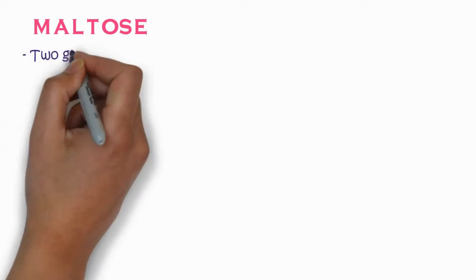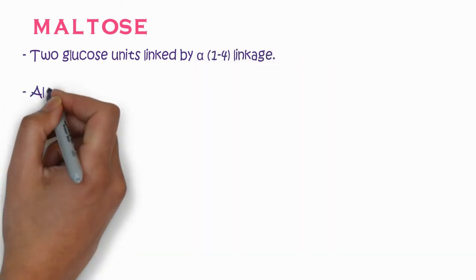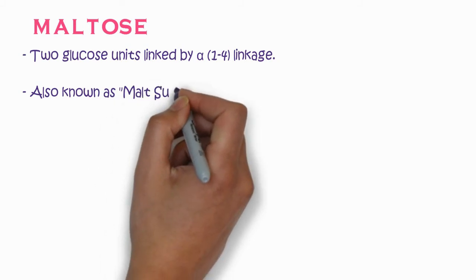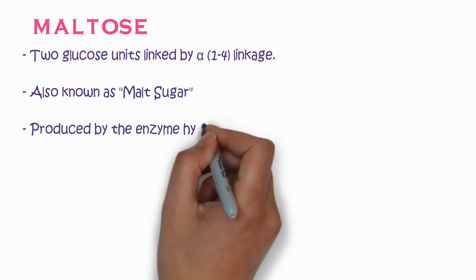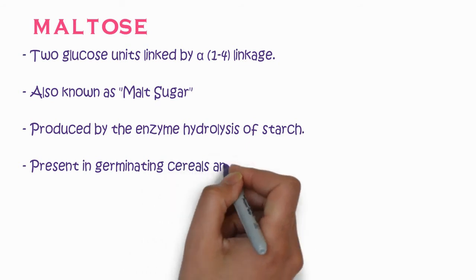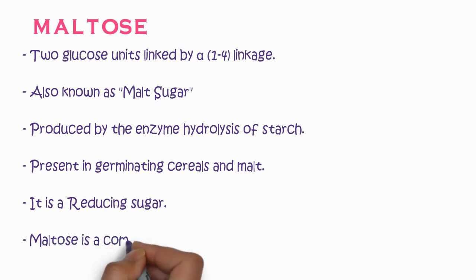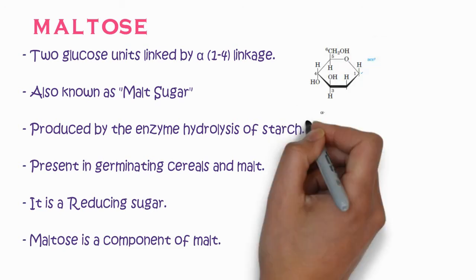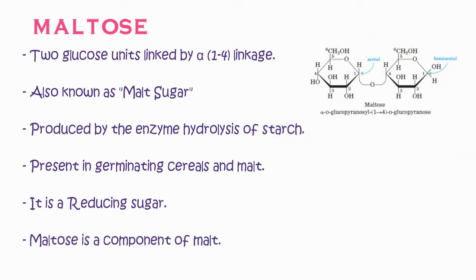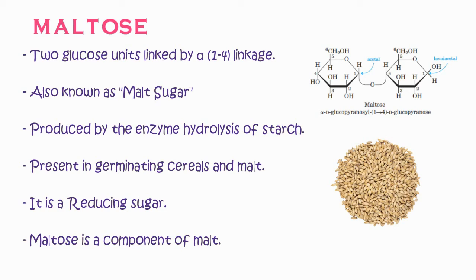The next example is maltose. Two glucose units are linked by an alpha-1,4 linkage. It is also known as malt sugar. It is produced by enzymatic hydrolysis of starch, or can be obtained by acid hydrolysis. It is present in germinating cereals and malts, and it is a reducing sugar. In the chemical structure, alpha-D-glucopyranose is attached to another glucose unit by a 1,4 linkage.